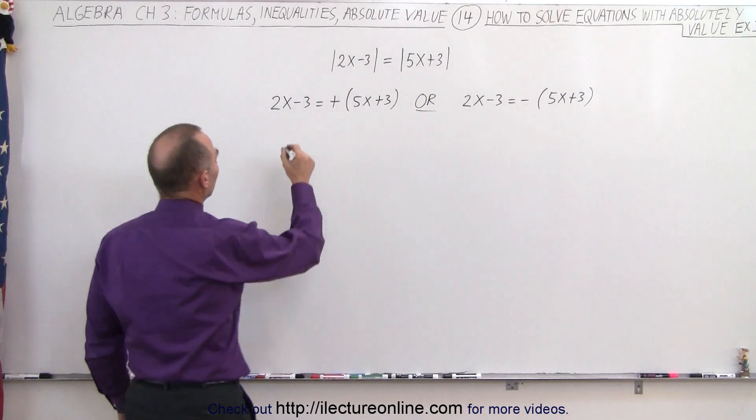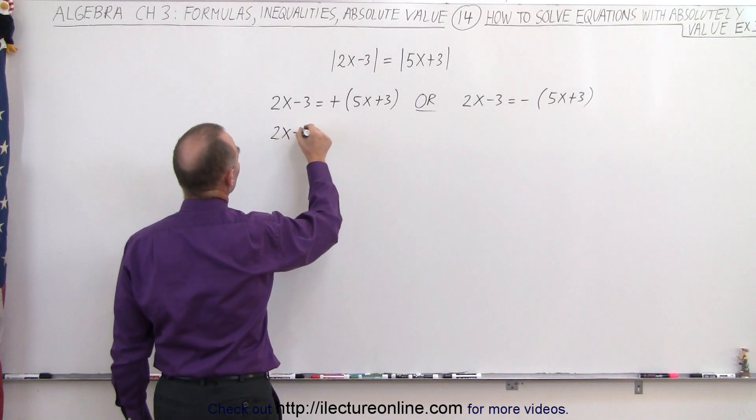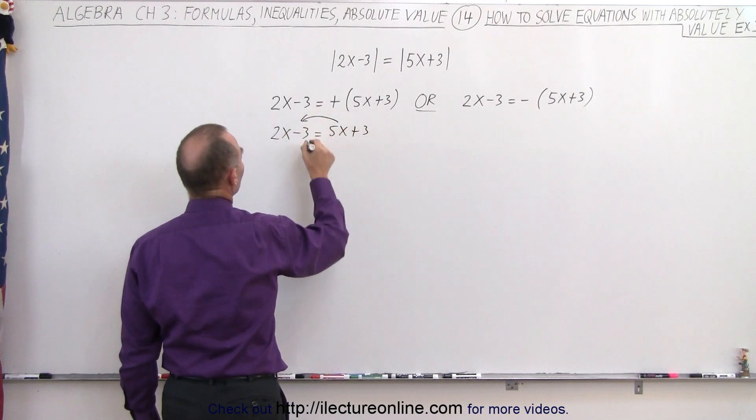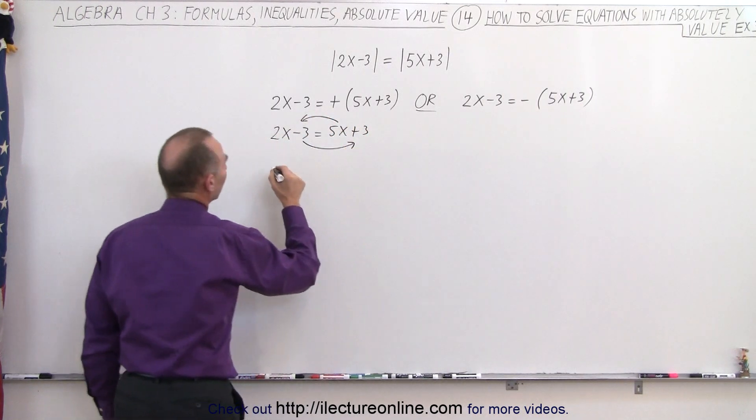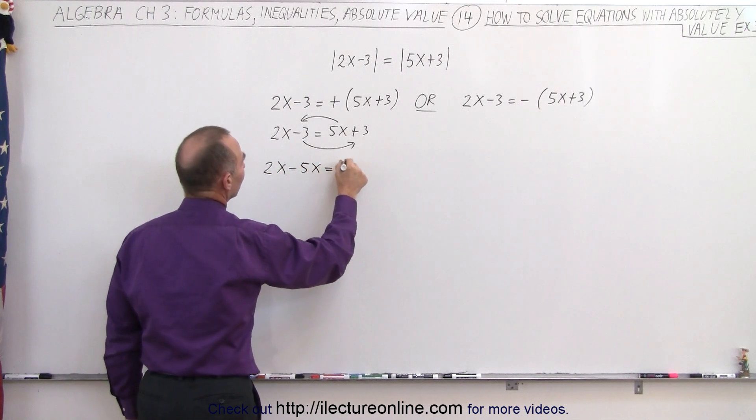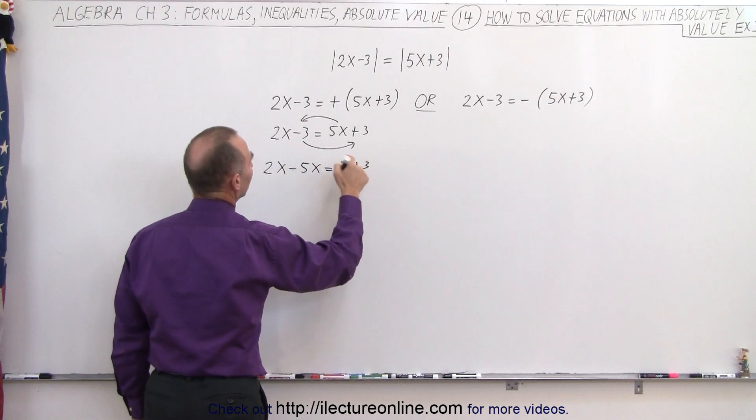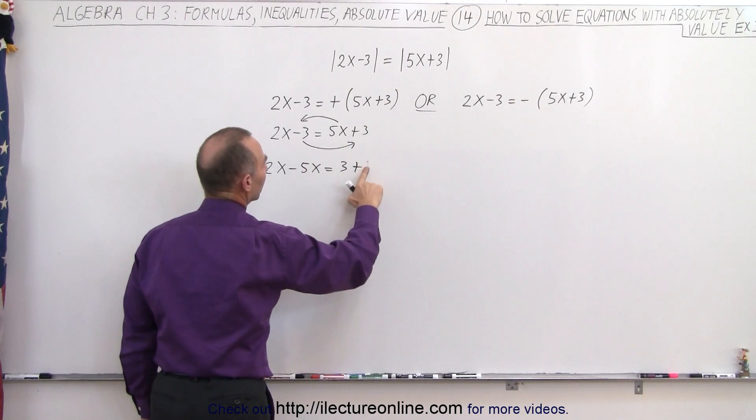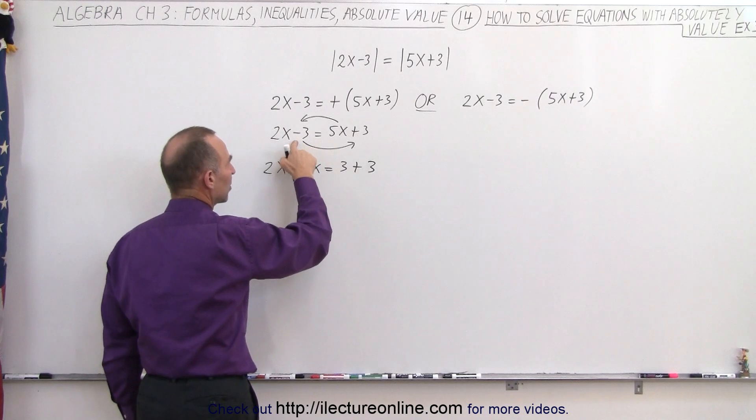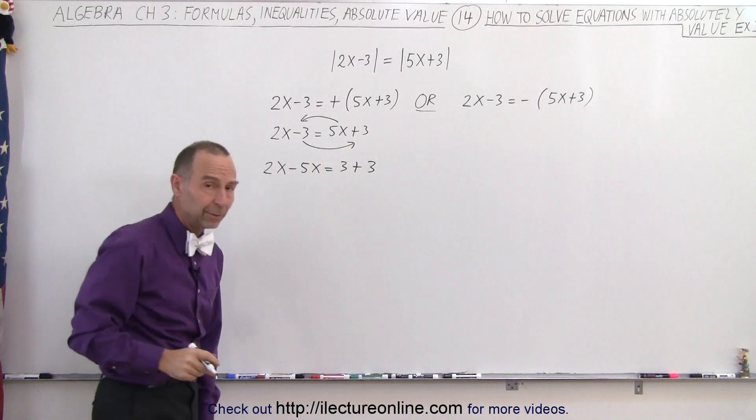Okay, on the left side, we end up with 2x minus 3 is equal to 5x plus 3, and now we're going to move all the x's to one side, all the numbers to the other side, so we get 2x minus 5x is equal to 3 plus 3. Let's make this a little bit bigger, plus 3, there we go, because the plus 5x becomes negative 5x, the negative 3 becomes plus 3 when we cross the equal sign.